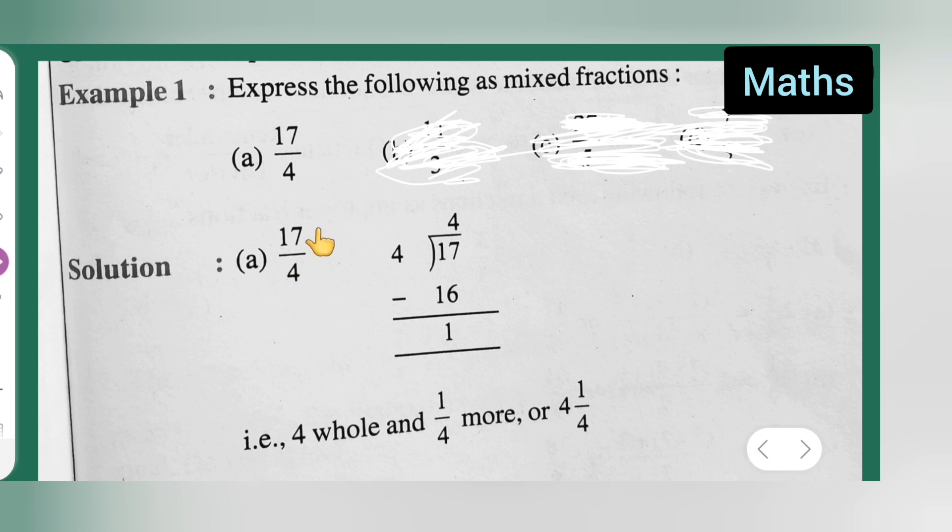Now what you will have to do is, you will have to divide this, 4 and 17. 4, 4s are 16, 1 will remain. So basically what happens over here,